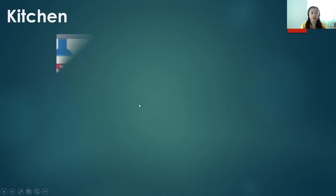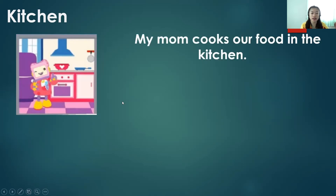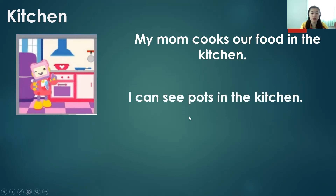Next we have the kitchen. In the kitchen, we can see a refrigerator, oven, pots, and pans. My mom cooks our food in the kitchen. We usually cook in the kitchen, and we eat in the dining room. I can see pots in the kitchen — it is what we use to cook.